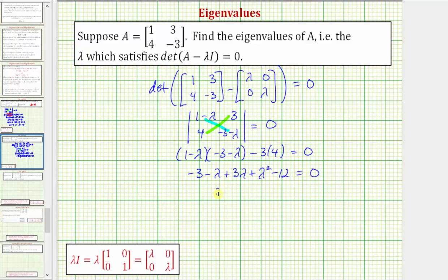Combining like terms, we have lambda squared plus two lambda minus fifteen equals zero.